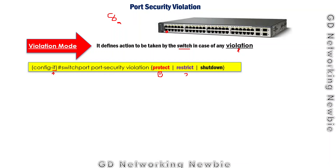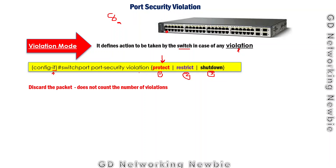The three violation modes are: protect, restrict, and shutdown. In case any violation occurs on that specific port, one of these three actions can be taken. We configure only one mode at a time on a given port.